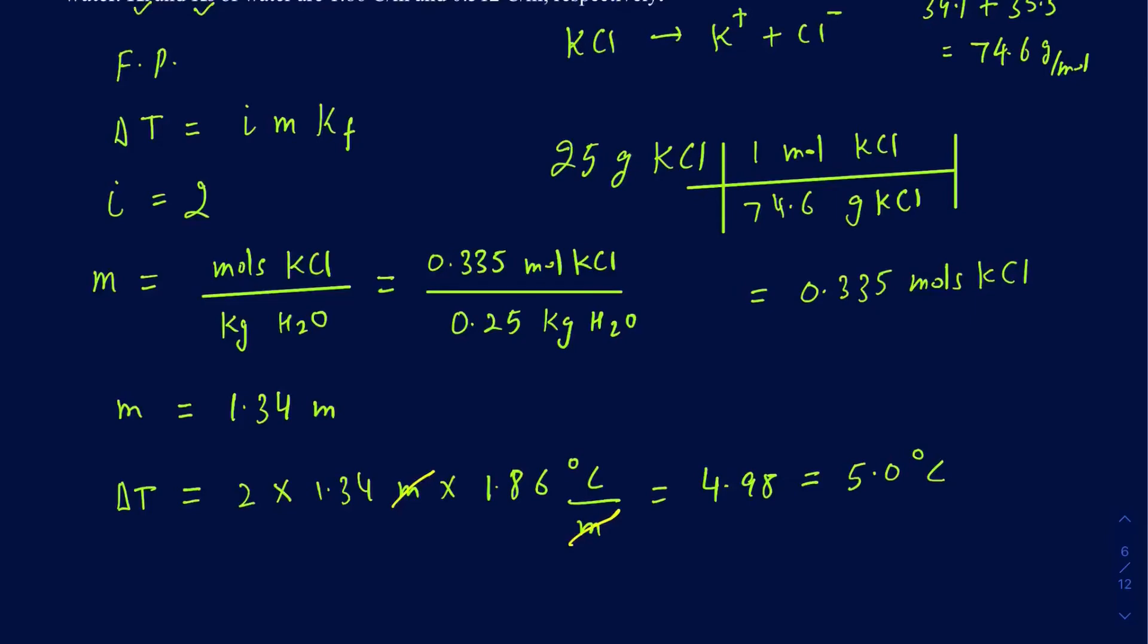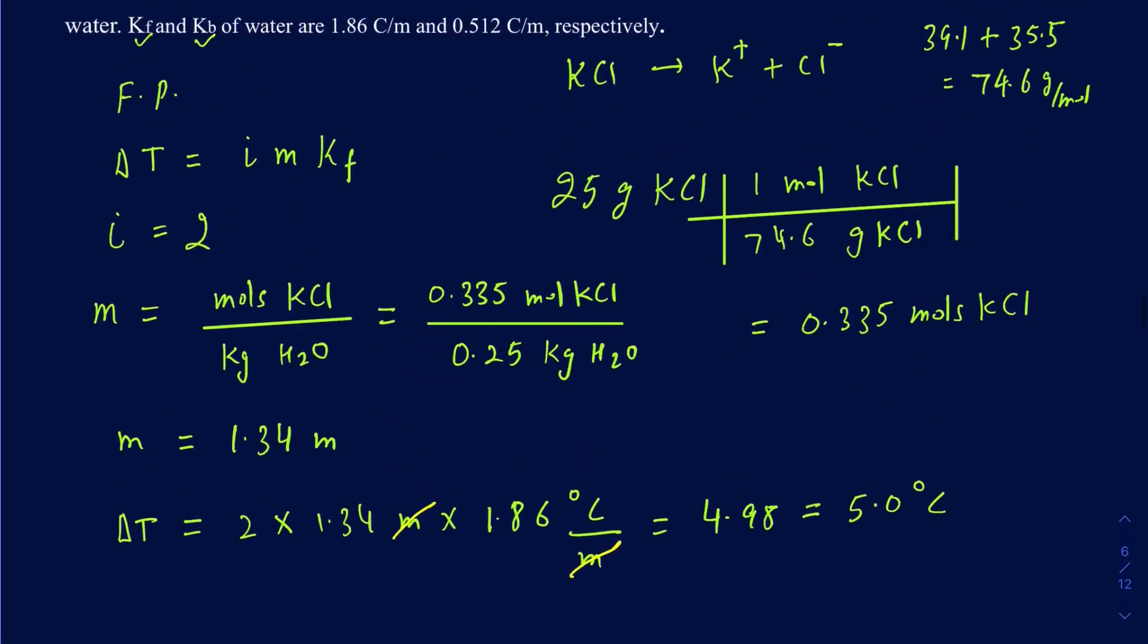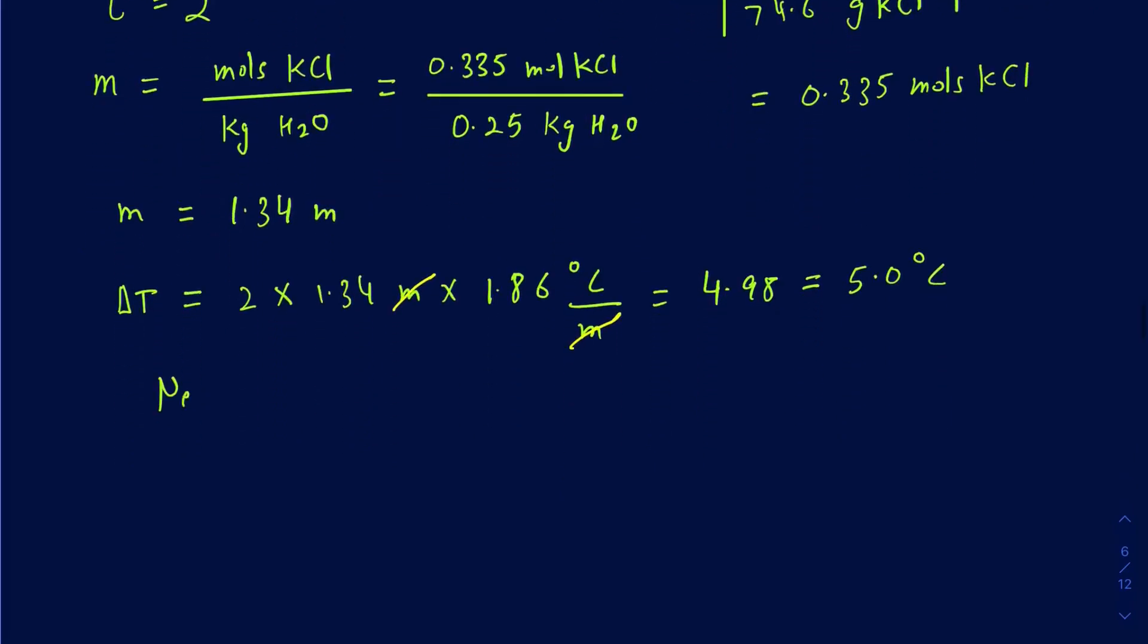So what's going to be your freezing point? So remember, your normal freezing point for water is 0 degrees Celsius, so that's something you're expected to know. You're supposed to know what the normal boiling point and freezing point of water is. So then your new freezing point is going to be 5 units below the actual normal freezing point, which is 0. So your new freezing point is going to be minus 5 degrees Celsius. So that's how you're going to be calculating. You always go below when you're doing the freezing point.